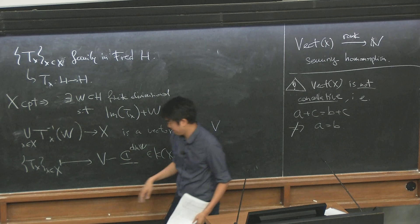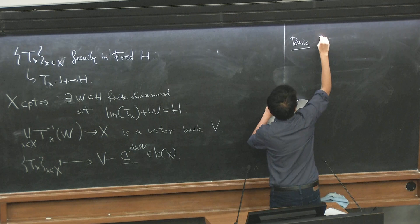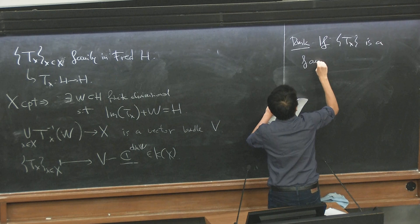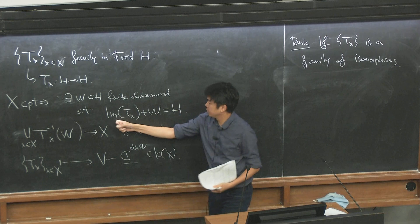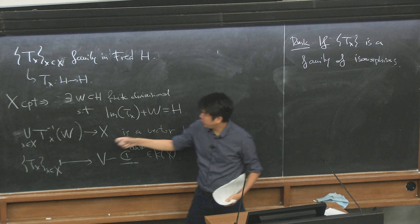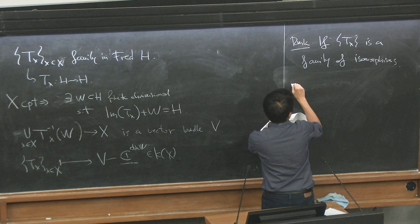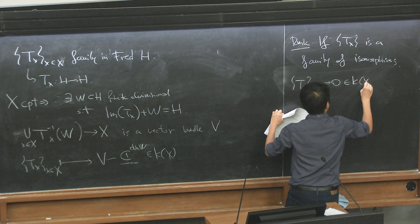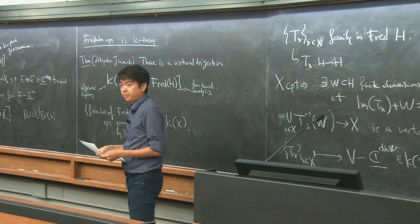An important remark: if T(x) is a family of isomorphisms, then the image of T_x is everything, so you can pick W to be zero, and V — the inverse image of zero — is also zero. Both are zero, so T_x gets sent to zero in K(X). This will be the key observation for our applications: under this bijection, a family of isomorphisms gets sent to zero.